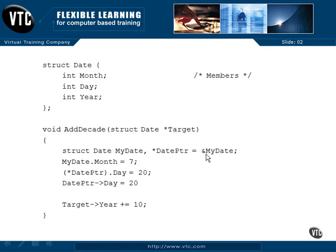Down here, we've set the address of myDate into datePointer. We can say myDate dot month equals 7 — that's our normal member access with a dot operator. Now here's how you use the pointer: datePointer is pointing to myDate. We can write (*datePointer).day equals 20. Because of how the dot operator and pointer asterisk work, we need parentheses to bind this properly, so we actually get the contents of datePointer dot day.